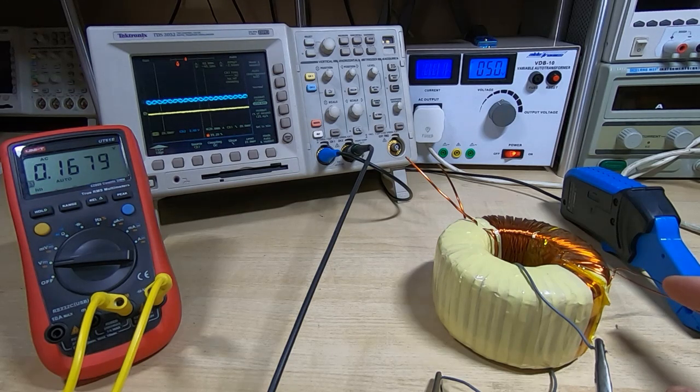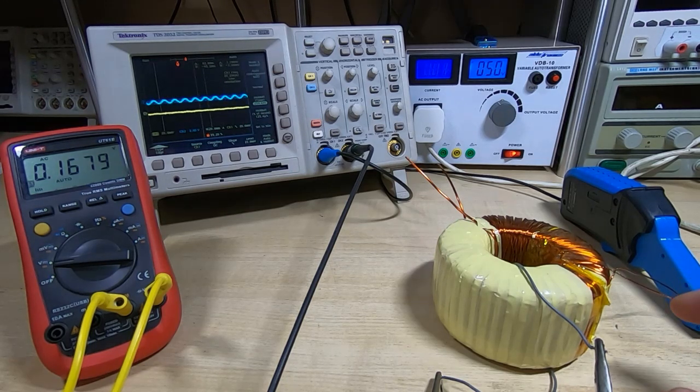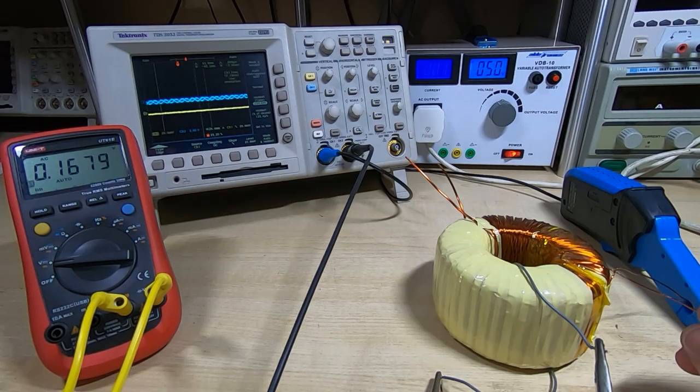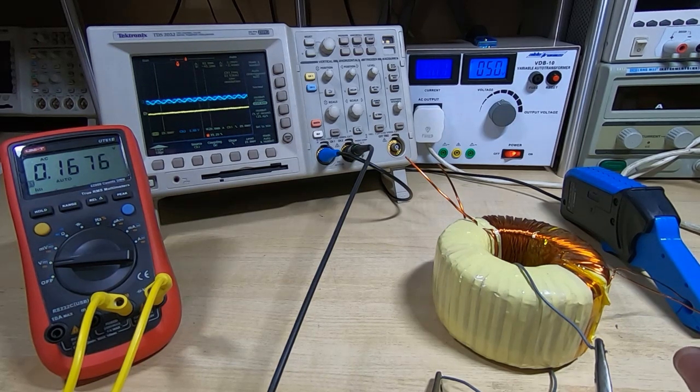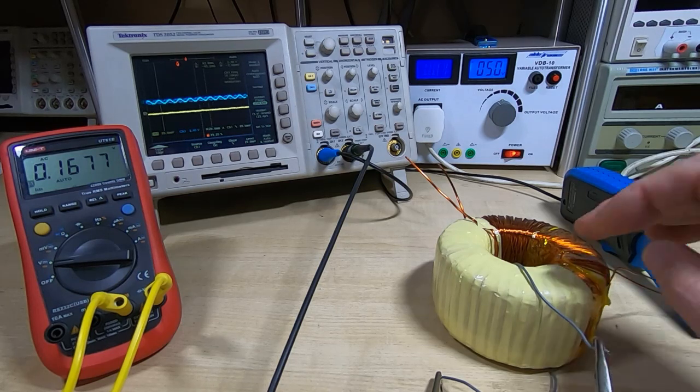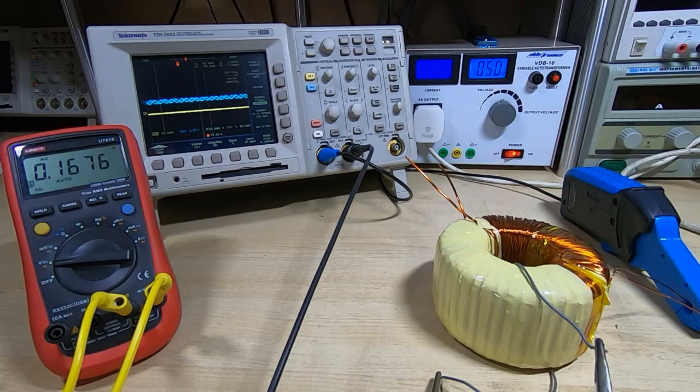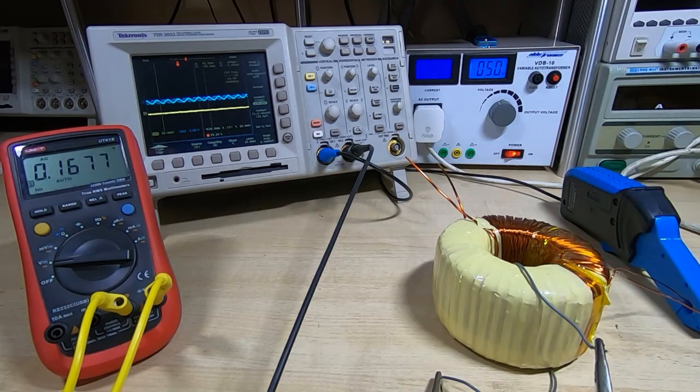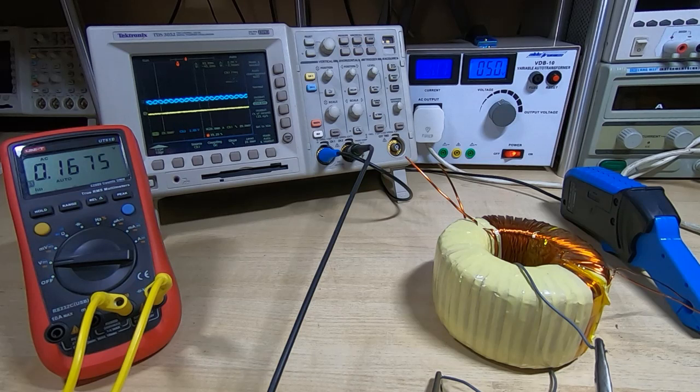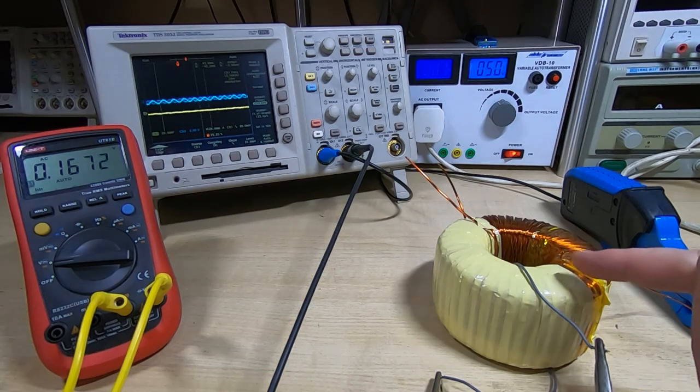We can measure the thickness of the wire and that will enable us to work out the maximum current that this winding can carry. What you then have to do is start looking at the core itself. If you measure the core and you know the material, you can work out the power handling capacity of the core. This only tells us the number of turns on the primary, it doesn't tell us what the voltage is that it's designed to run at. This will be determined to a large degree by the core.